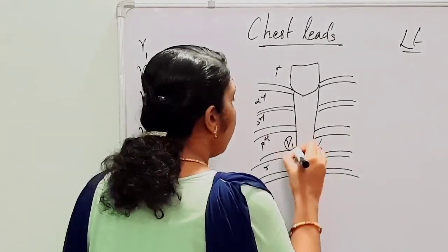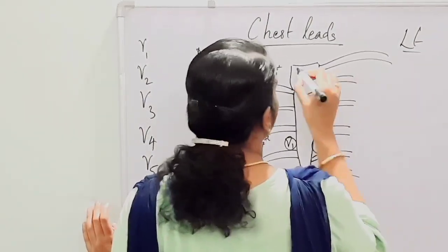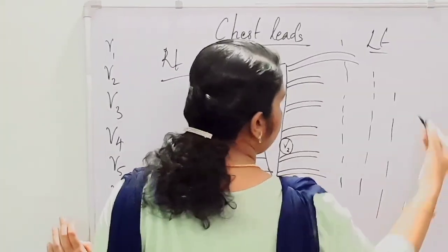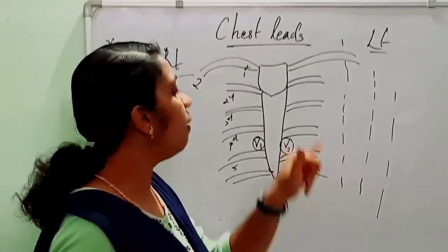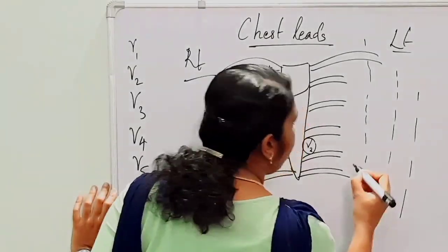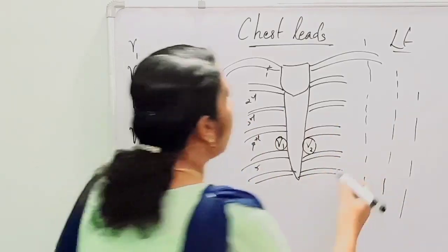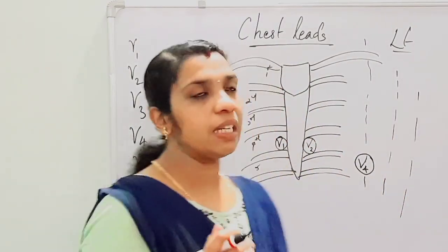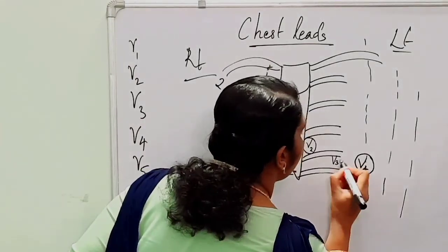We have placed V1 and V2. Next, we are going to place V4 — please be careful, we place V4 before V3. This is the clavicle. This is the midclavicular line, this is the anterior axillary line, and this is the midaxillary line. V4 is placed in the left fifth intercostal space in the midclavicular line. V3 is then placed in between V2 and V4.